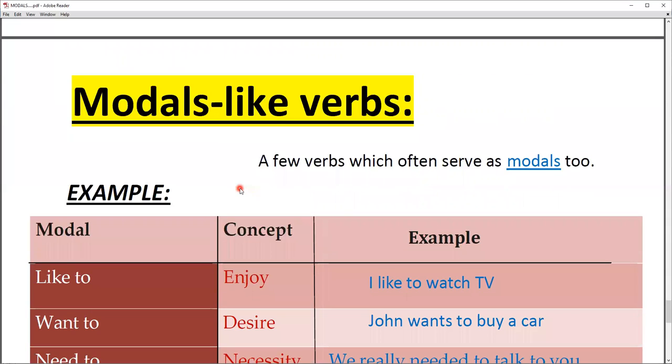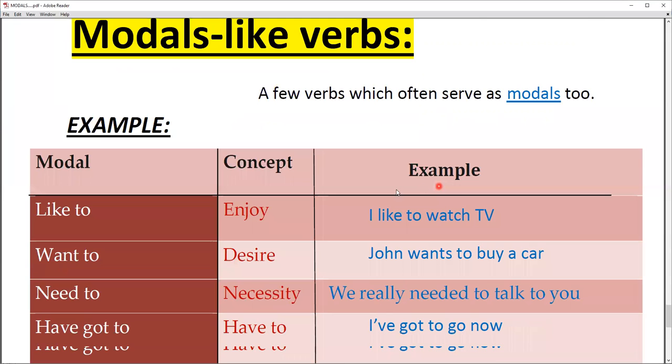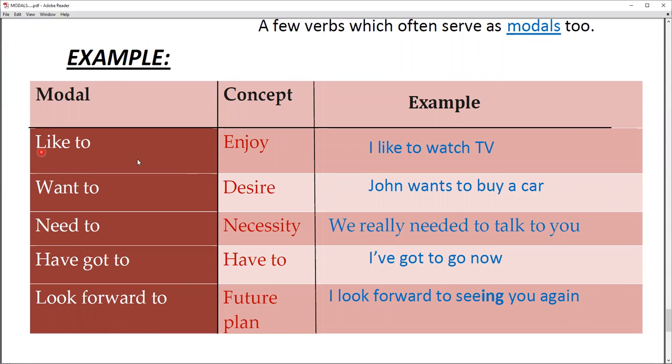Modal like verbs. These are the models that work as verbs. A few verbs which often serve as modals. Like to: the concept is enjoy. I like to watch TV. Want to: it is desire. John wants to buy a car. Need to: necessity. We really needed to talk to you. Have got to: have to. I've got to go now.